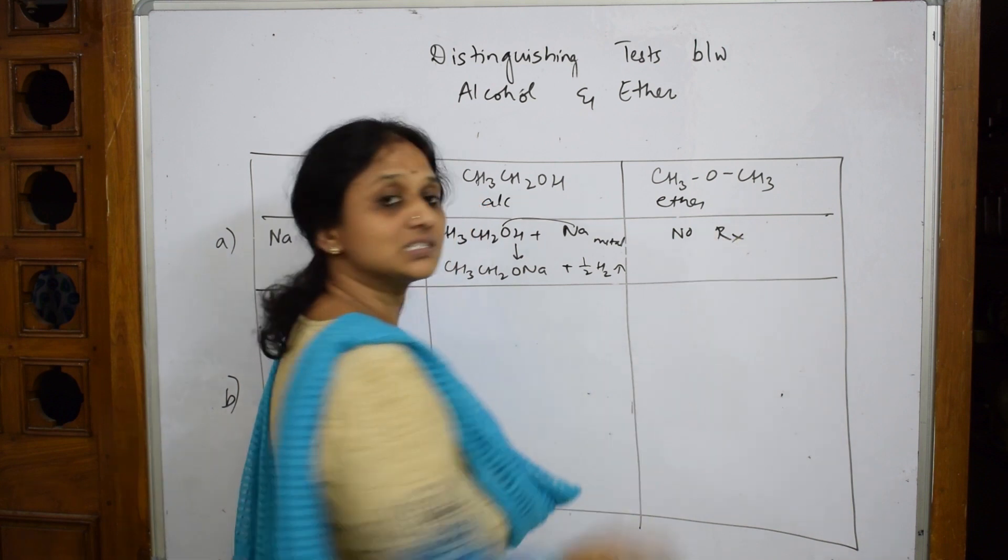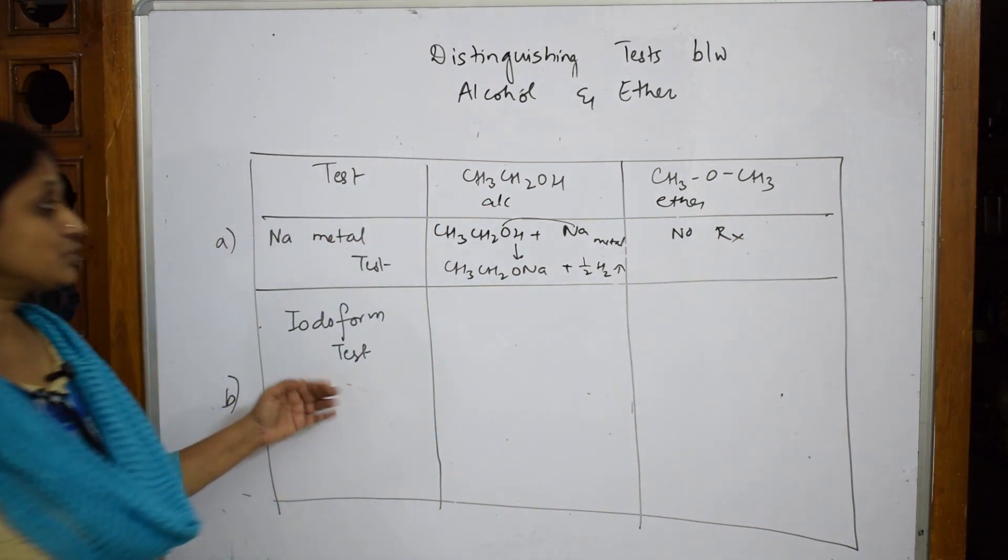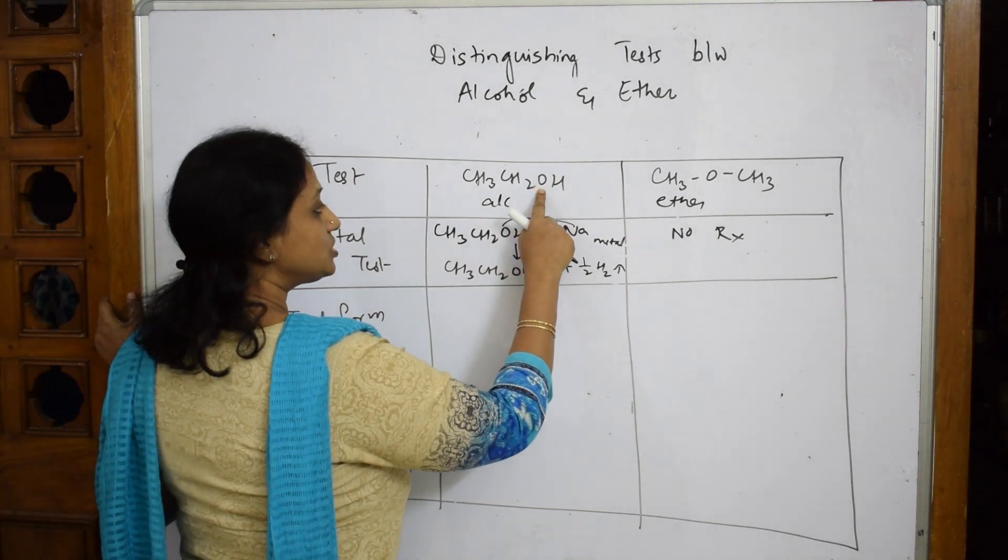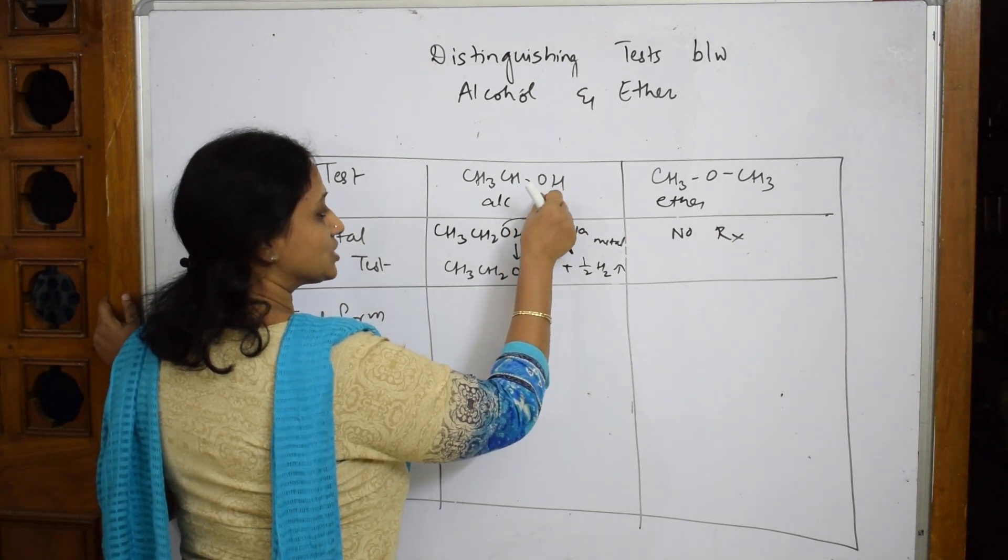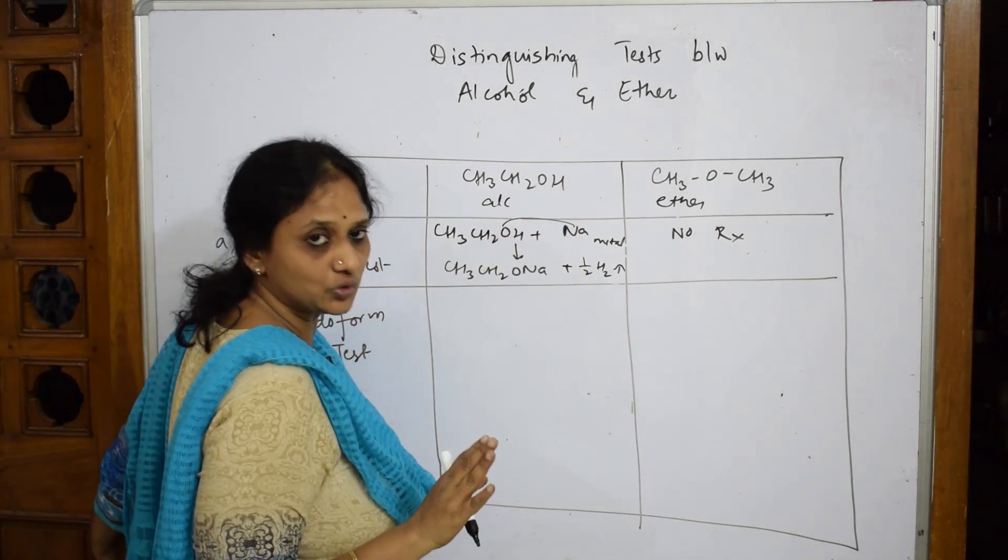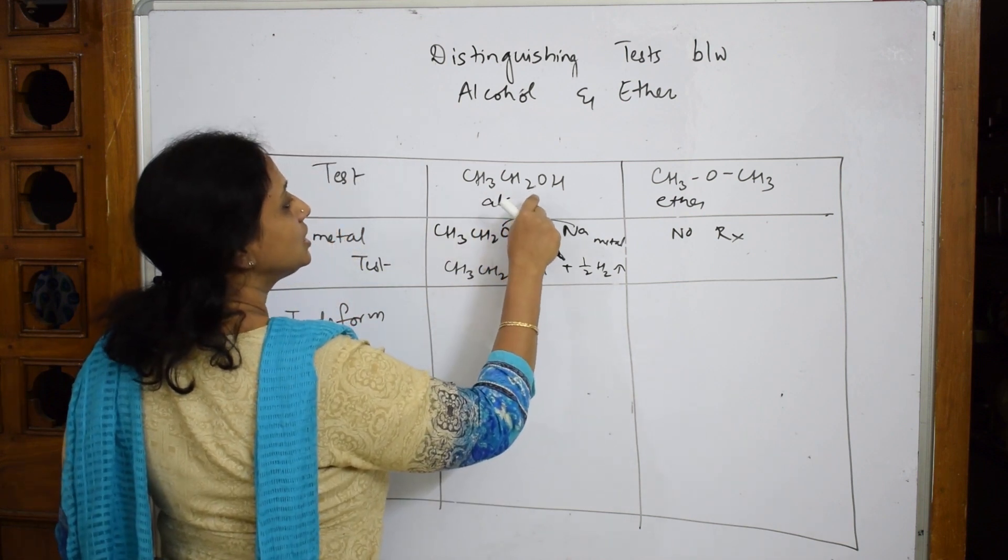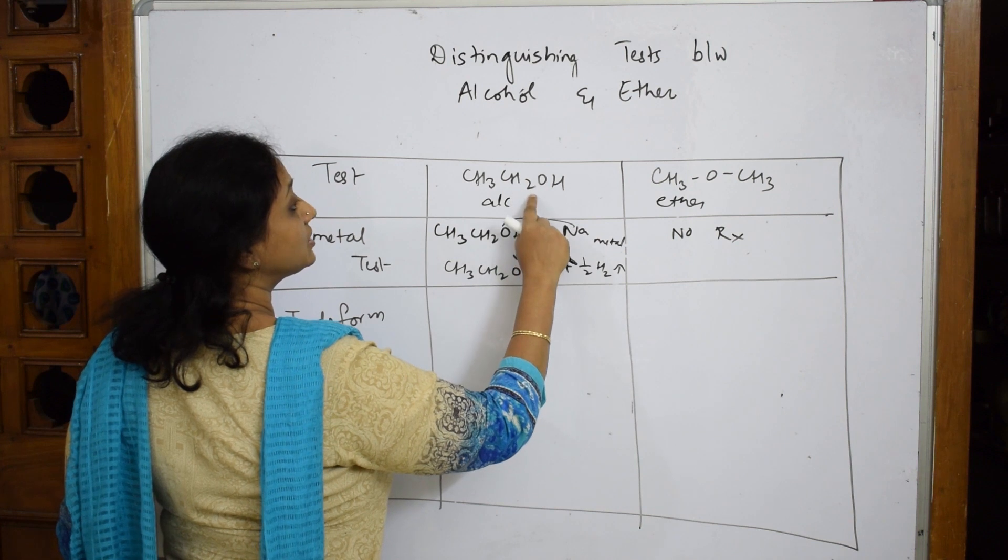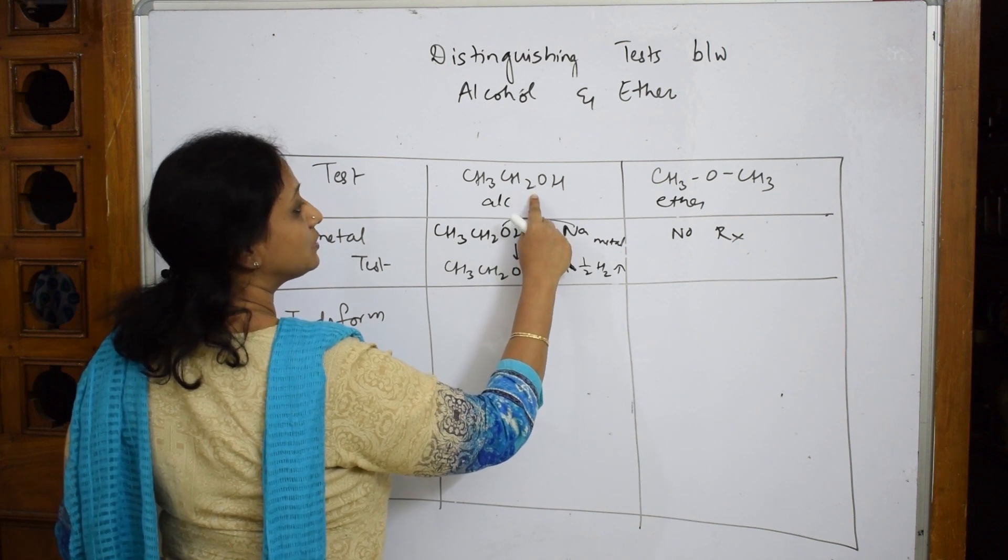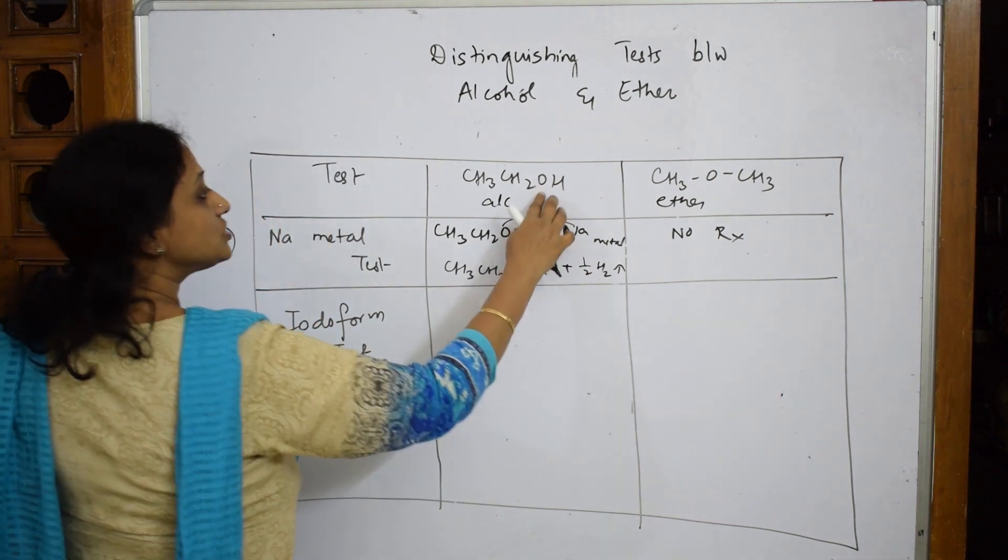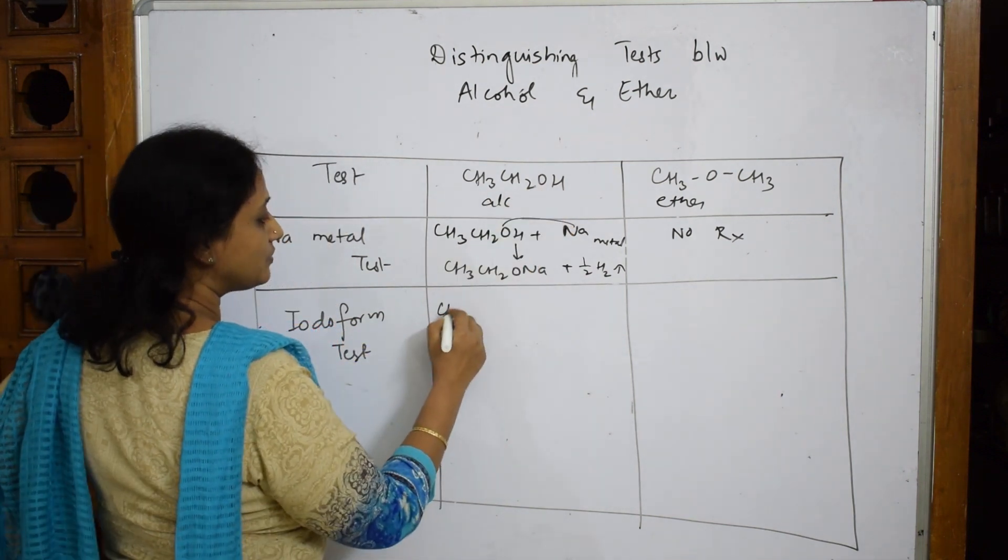Now when I come to the next one, I said if an oxygen is attached to a methyl ketone, it can show the iodoform test. I'm taking that concept here: oxygen attached to carbon.